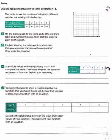Number four, on the blank graph to the right, add a title and then label the number and the axes. Then plot the ordered pairs. So I'm going to title it Blueberries. My axes are going to be Servings.